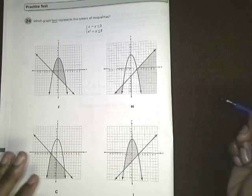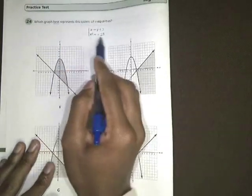Alright, this is the Algebra 2 practice EOC question number 24, and the question asks us which graph best represents the system of inequalities.